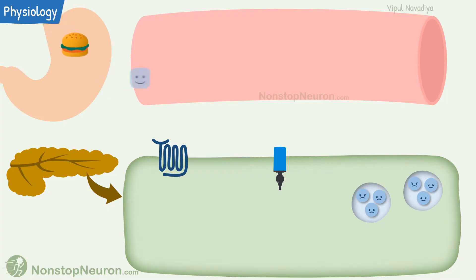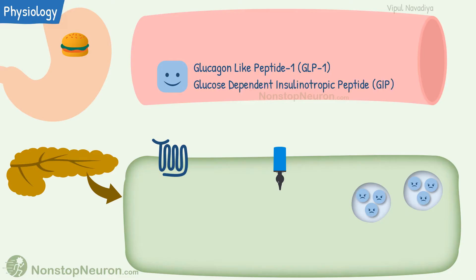Incretins are released from the gut after taking food. They include glucagon-like peptide 1, or GLP-1, and glucose-dependent insulinotropic peptide, or GIP. GIP has poor action in diabetes, so we will ignore it in this discussion.